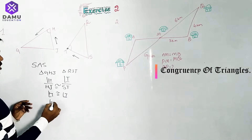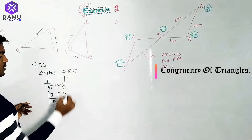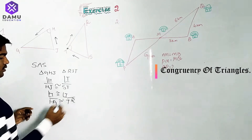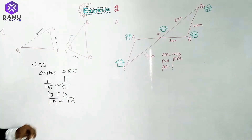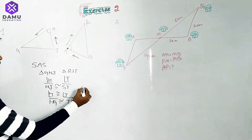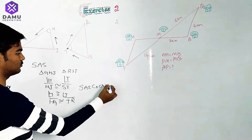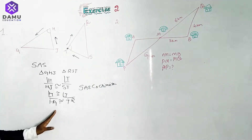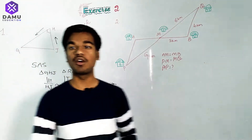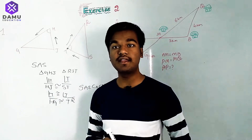Continuing from the angle, HG is congruent to TR. So this satisfies the SAS congruency criterion. This is the additional information required to show that the two triangles are congruent to each other under the SAS rule.